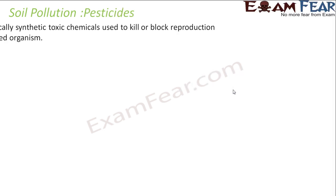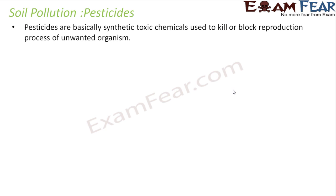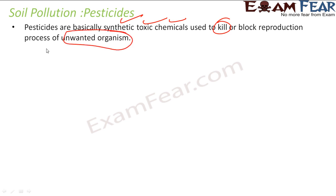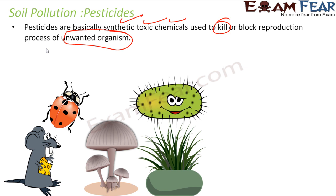Pesticides are synthetic toxic chemicals used to kill or block the production of unwanted organisms — such as rats, ants, fungi, weeds, and germs. They are used to control the population of these unwanted species.